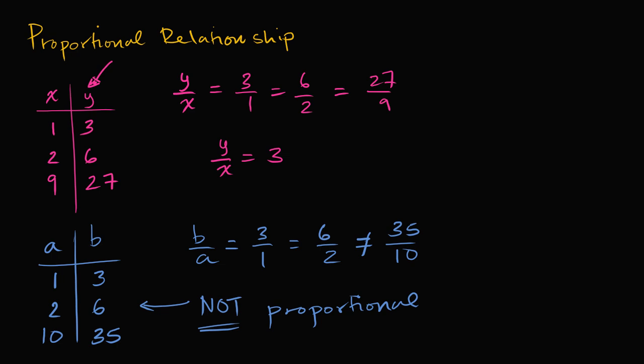And you could have actually gone the other way. You could have said, well what's the ratio of x to y? Well over here would be one to three, which is the same thing as two to six, which is the same thing as nine to 27. When you take this ratio, if you say the ratio of x to y instead of y to x, you see that it's always one third. But any way you look at it, the ratio between these two variables, if you say y to x, it's always going to be three, or x to y is always going to be one third. So this is proportional while this one is not.